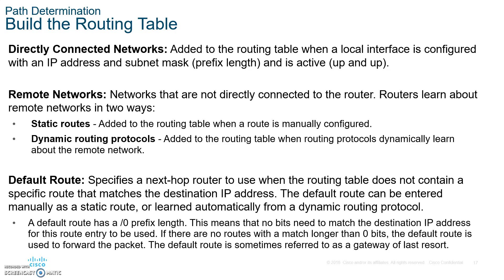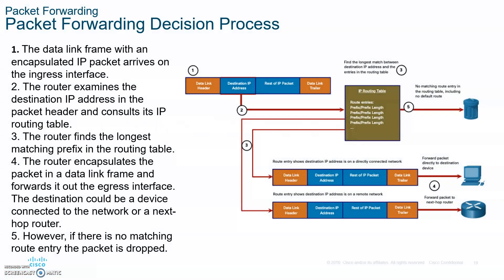Dynamic routing protocols allow routers to talk to each other using software like RIP, EIGRP, or OSPF to build their own routing tables. The default route is used when there's no match at the end of the routing table — it specifies the next-hop router to use when no specific route matches the destination IP address. We'll discuss this more in the next chapter.